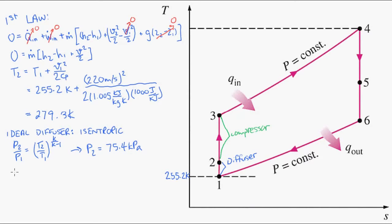Now for the compressor we know our pressure ratio. So then we can solve for T3 since we know T2. So then we get T3 is equal to 442 Kelvin.